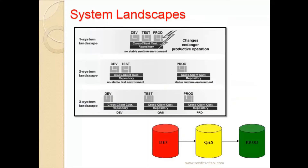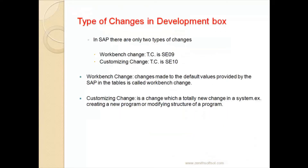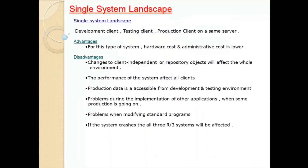the data will be imported from the Development system to the Quality system for testing, where the test team will start testing those objects. Once testing is done successfully, the objects will be moved to the Production system. This is how the typical three-system landscape works.